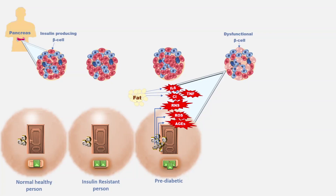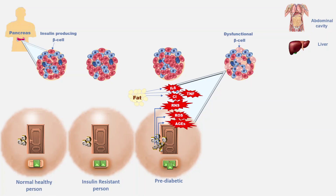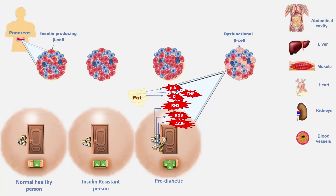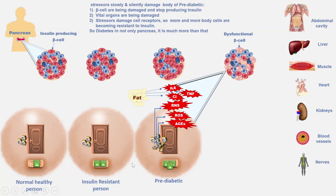These metabolic stresses not only damage beta cells, they also damage other organs of the body. Excess fat gets deposited in the abdomen and makes pro-inflammatory adipokines. Normally the liver doesn't contain any fat, but in diabetics, fat also gets deposited in the liver. More than 70% of diabetics suffer from non-alcoholic fatty liver disease. These stresses also damage other organs like muscles, heart, and kidneys. They narrow the blood vessels, leading to a rise in blood pressure, and also damage the nerves. In addition, these stresses damage insulin receptors and make more and more cells resistant to insulin. So, diabetes is not just about glucose, insulin, and the pancreas — it is much more than that and affects almost every organ of the body.